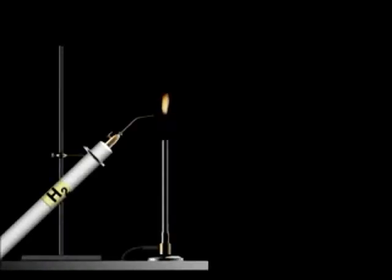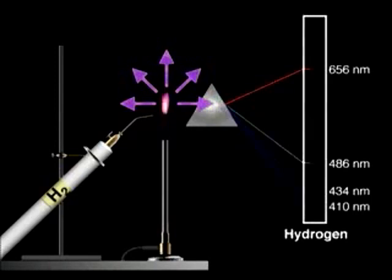If an element is heated, it emits light. When the light passes through a prism, there are bright lines at certain wavelengths. These lines are at different positions for different elements according to their different energy systems.